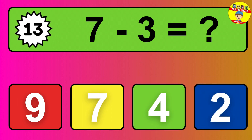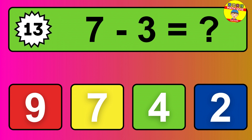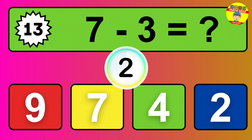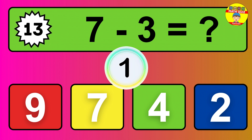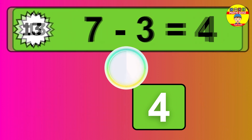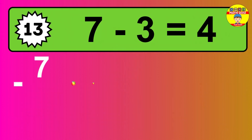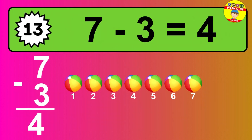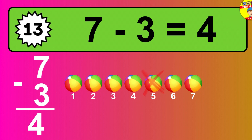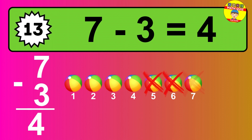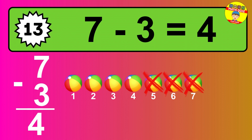Question 13: 7 minus 3 equals what? The answer is 7 minus 3 is 4. Let's count it: 1, 2, 3, 4.